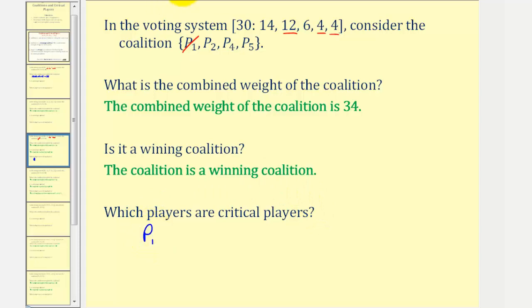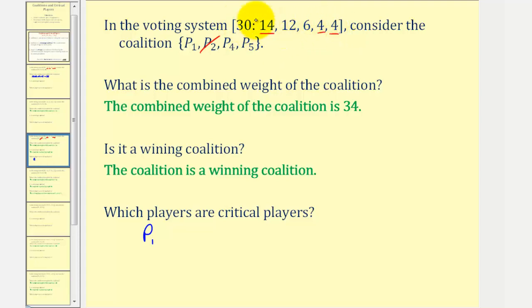Now we'll see if player two is critical. If player two leaves the coalition, we're left with player one, player four, and player five. The combined weight would be fourteen plus four plus four, or twenty-two, which is less than thirty and does not meet the quota. Therefore player two is also critical.